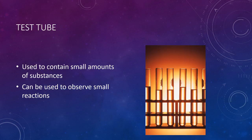We have test tubes. These are used to contain small amounts of substances — it could be solids or liquids, but most of the time it's going to be liquids. You can use test tubes to observe small reactions, such as mixing two liquids together to see if they change color, make a precipitate, or produce some type of chemical reaction.